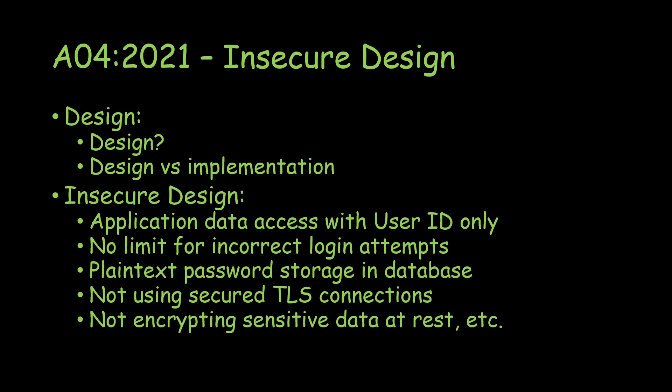Let's look at a few examples. First: application data access with user ID only. A web application is created where the user enters a user ID and gets a result — commonly seen in exam results systems where you enter a student ID and get your results. There's no password present, so if you know another user's ID you can get their results too. That's because the design itself says there has to be no authentication — no password is present in the design phase, so it's not implemented.